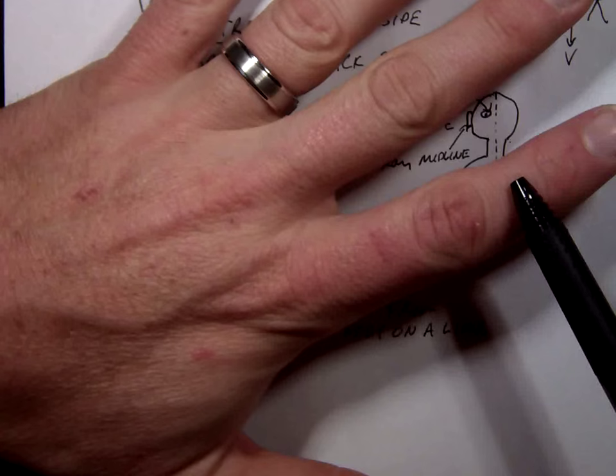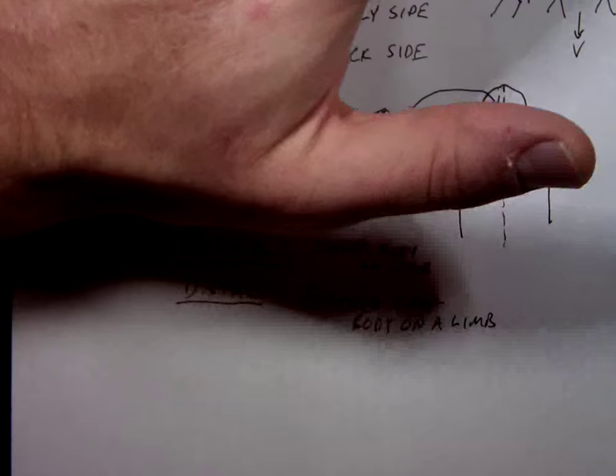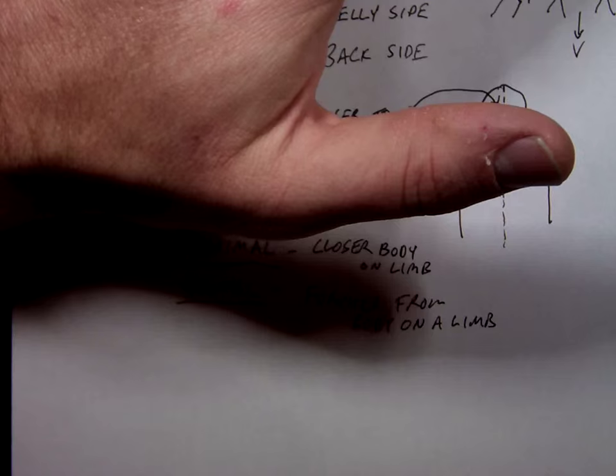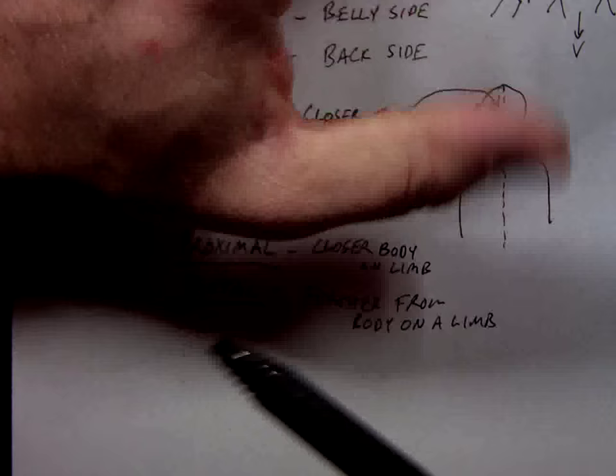So distal phalanx, proximal phalanx, middle phalanx are the first finger. I'm sorry, second finger, because your first finger is this one. Now, this one is where it gets weird. This is why you have 56 instead of 60. This digit only has two bones. This one here, which is distal, and this one here, which is proximal. Just the two. Your big toe is the same way. It only has two.